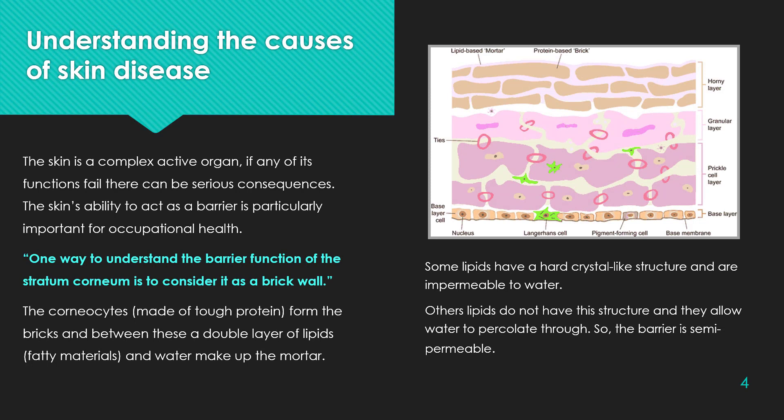Understanding the causes of skin disease: The skin is a complex active organ, and if any of its functions fail there can be serious consequences. The skin's ability to act as a barrier is particularly important for occupational health. One way to understand the barrier function of the stratum corneum is to consider it as a brick wall. The corneocytes, made of tough protein, form the bricks, and between these a double layer of lipids — fatty materials — and water make up the mortar. Some lipids have a hard crystal-like structure and are impermeable to water; others do not have this structure and allow water to percolate through, so the barrier is semi-permeable.